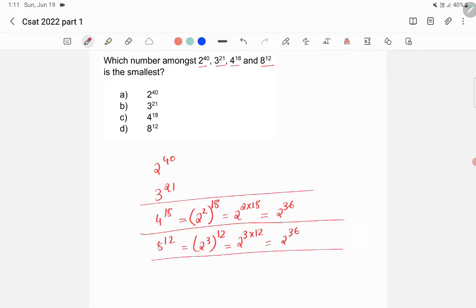So now we have to check which of these numbers is smallest. We have 2 raised to 36 here and here, we have 2 raised to 40 here, and 3 raised to 21 here. We know that there will be only one answer for this question, so these two are the same, 2 raised to 36 and 2 raised to 36, so these options will be wrong.